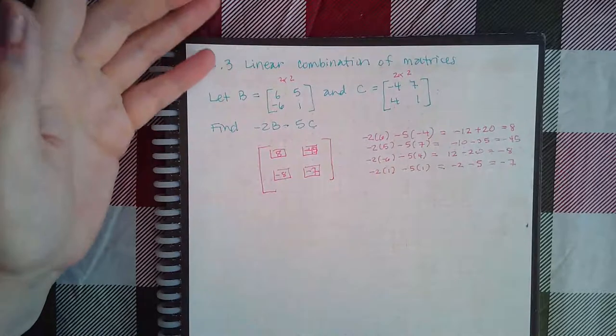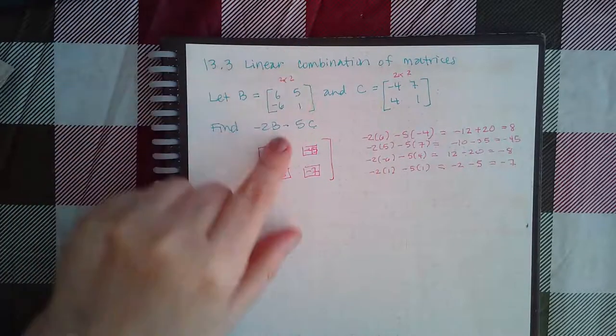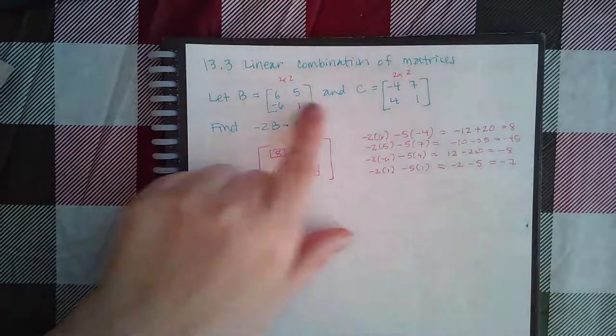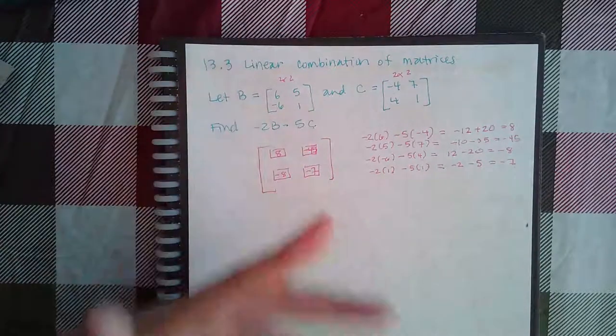Remember, in order for you to do any kind of linear combination, mostly add and subtract, you can do scalar multiplication no matter what the dimensions of the matrix are, because you're just taking that scalar times every single entry and then getting the new matrix.